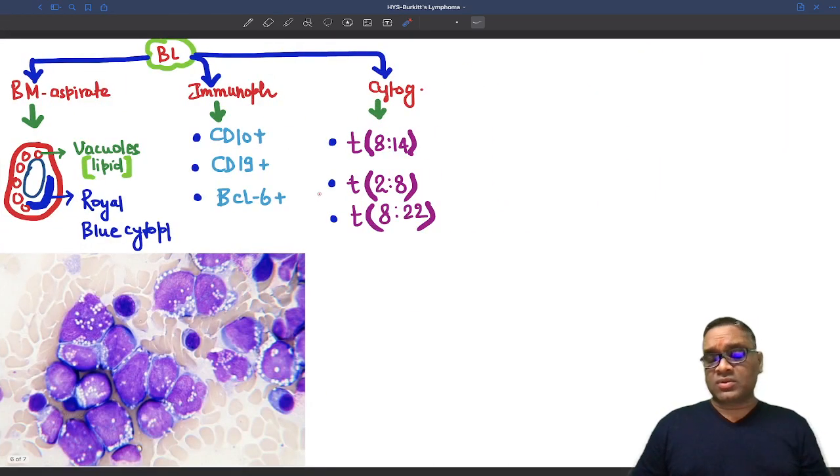When we come to the diagnosis of Burkitt lymphoma, we require three things: bone marrow aspirate, immunophenotyping, and cytogenetics. Aspirate will be showing you numerous vacuoles into the cytoplasm, and cytoplasm will be having a characteristic royal blue cytoplasm. So you can see there is royal blue cytoplasm here. These are the royal blue cytoplasm areas. And they are having so many vacuoles which are having lipid also.